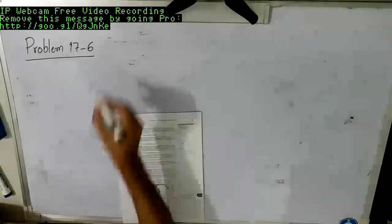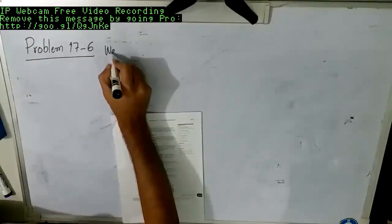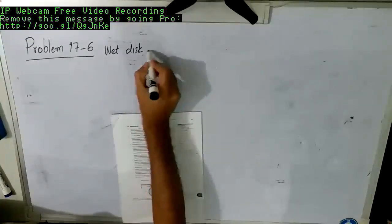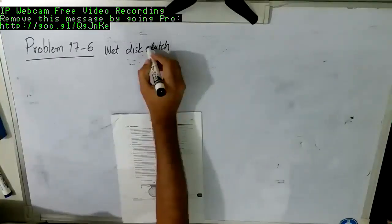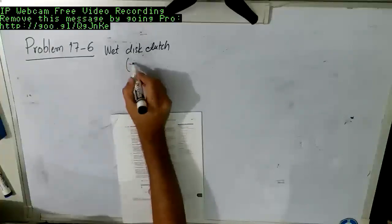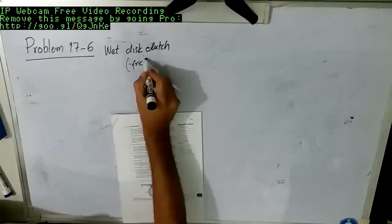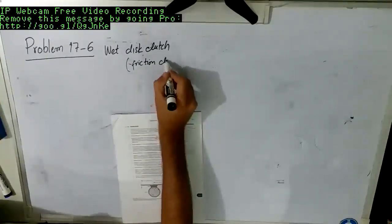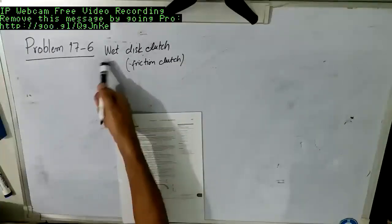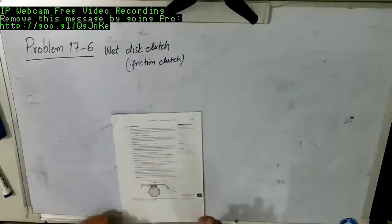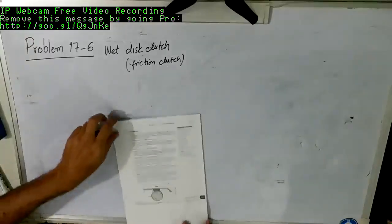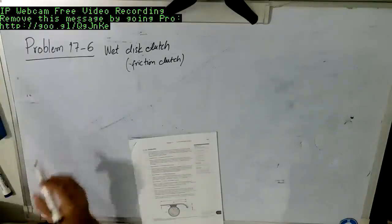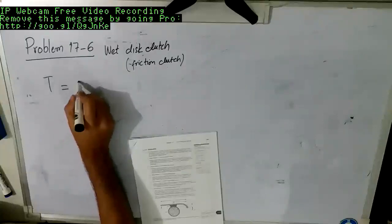The statement says that how many surfaces are needed in a wet disc clutch. So it is a wet disc clutch, which is actually a type of friction clutch, and it is being called wet because there has been lubrication there in the clutch.